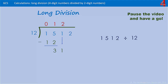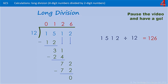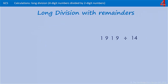We now have — how many 12s in 31? Two lots of 12 is 24, so we put the 24 in there, take that away from the 31, which leaves us with seven. Bring down the last digit, which is two. How many times does 12 go into 72? It goes in six times, and six times 12 is 72. Take that away and we have zero. The answer is 126.